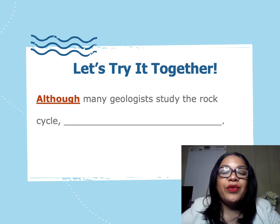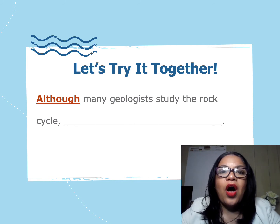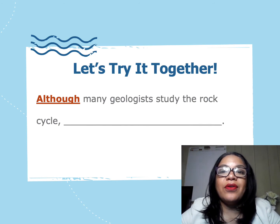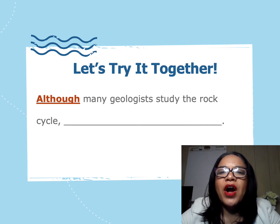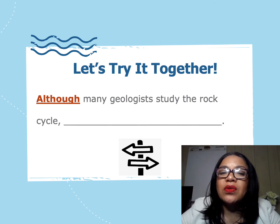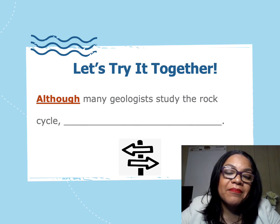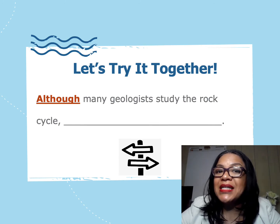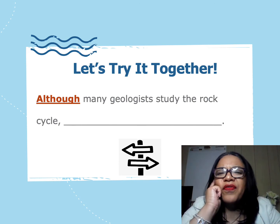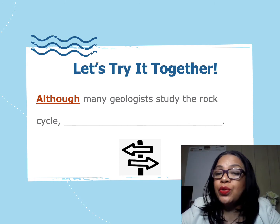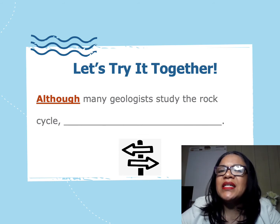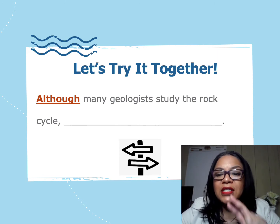Now, let's practice using another new transition word together. Let's expand this phrase into a sentence: 'Although many geologists study the rock cycle.' I noticed that one of our new transition words, although, is at the beginning of this sentence. Although is a change of direction transition word, so this tells me that the next part of this sentence will have to tell a contrasting or opposing idea. Think back to what we have learned about geologists and the study of rocks. Can you think of a contrasting idea that you could use to expand this sentence so that it is still true, but expresses two different ideas?